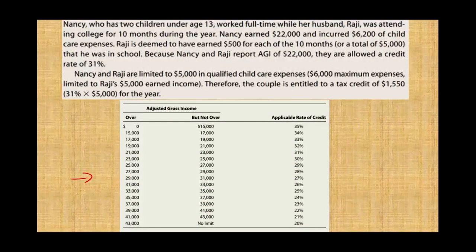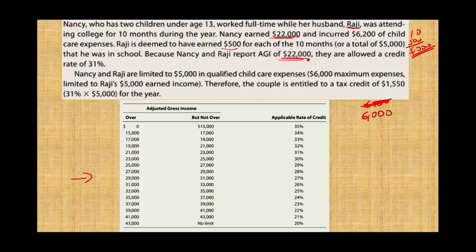Nancy has two children under age 13 and worked full-time while her husband Raji was attending college for 10 months during the year. Since they have two children, Raji is deemed to be earning $500 per month, so Raji is deemed to have earned $5,000 — meaning they both have earnings. Nancy earned $22,000 and incurred $6,200 of child care expenses. The maximum allowable for two children is $6,000. Nancy and Raji report a combined AGI of $22,000, which falls between $21,000 and $23,000 on the table, giving them an applicable credit rate of 31%.